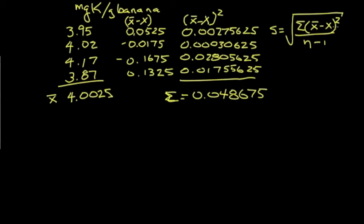We take that sum and divide by n minus 1. So the sum divided by n minus 1 would be this number, divided by n. There are four measurements, so n is 4 minus 1. And we're going to take the square root. Let's do that all in one operation.